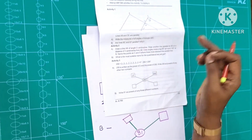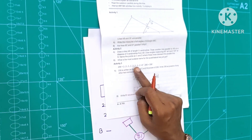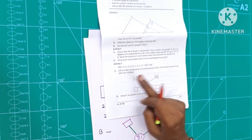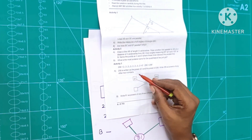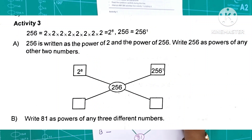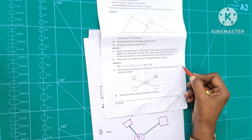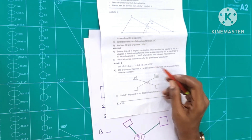Activity 3 is at page 286. Part A: 256 is written as the power of 2 — that is, 2 to the power of 256. Write 256 as powers of any other two numbers.